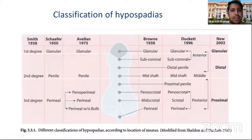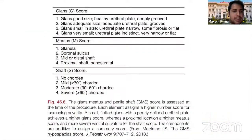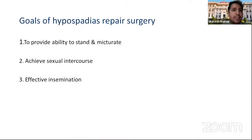First, the classification of hypospadias: the Letters classification given in 2003 comprises glanular, distal, and proximal hypospadias based on the location of the meatus. The GMS score comprises glans size, location of meatus, and curvature of shaft — if the score increases, severity and chances of complication increase. There are three goals of hypospadias repair: to provide ability to stand and urinate, achieve sexual intercourse, and effective insemination.